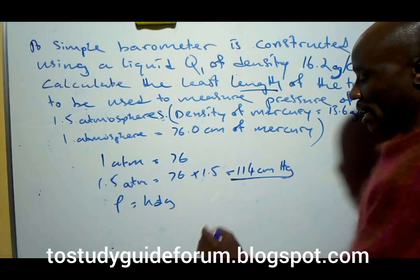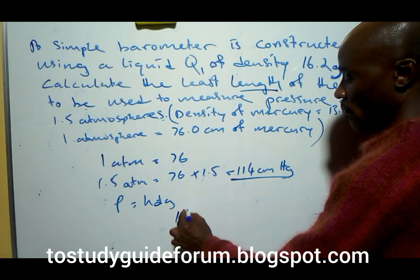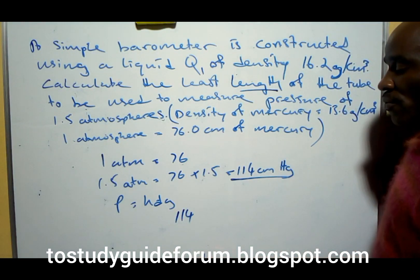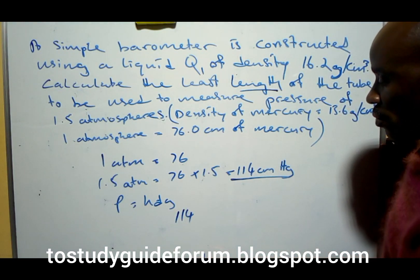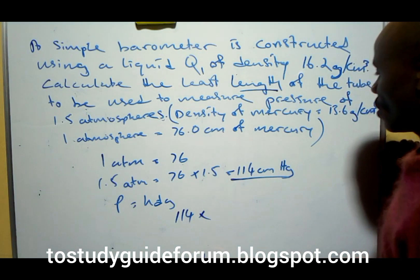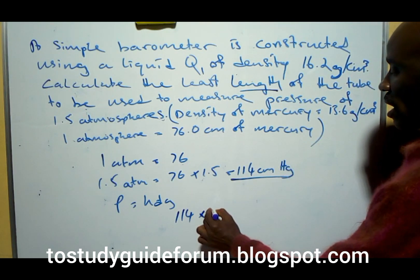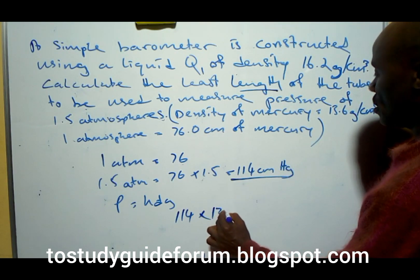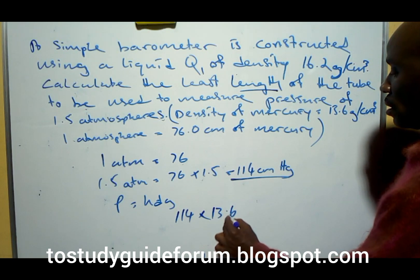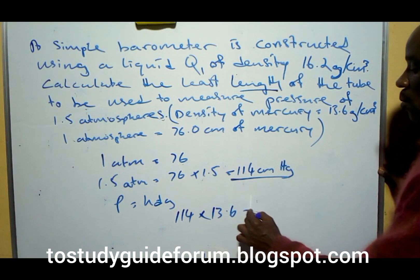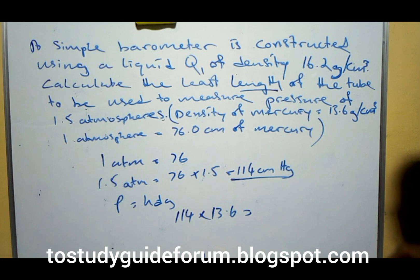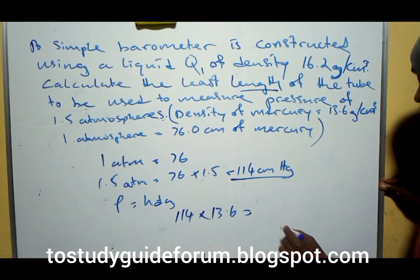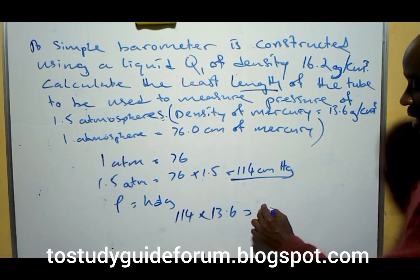means that since we have 114 cm³, it means that for the mercury that we measure that we're going to use to calculate this thing, 114 cm³ of the mercury times the density of the mercury, which will have to be 13.6, will be equal to